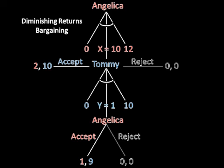But by offering ten, Tommy has incentive to accept, and Angelica will get two cookies out of the deal instead of one. And that is our sub-game perfect Nash Equilibrium.